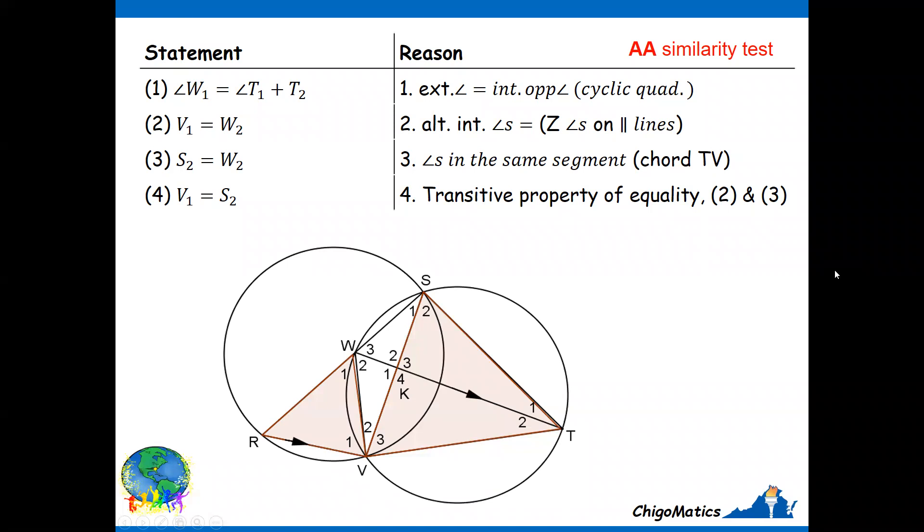We are simply saying that if that is the case, we had our first angle, this exterior angle, corresponding to this one—they are the same. Then from there, we are saying V1 equals S2. So we now have two corresponding angles in the respective triangles that are equal.